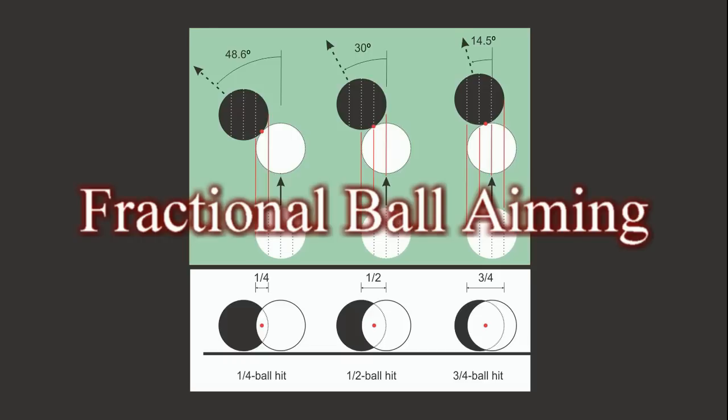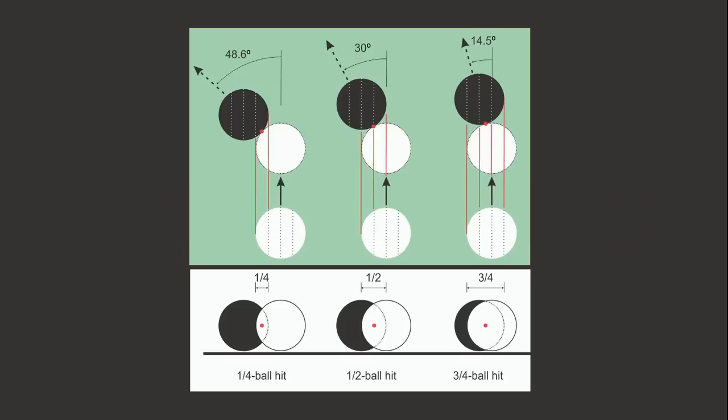Fractional ball aiming is another approach that is the basis of aiming systems taught under different names by some pool instructors. The basic concept is to think about all pool shots in terms of what is called ball hit fraction. This is the percentage overlap of the cue ball and object ball at contact.